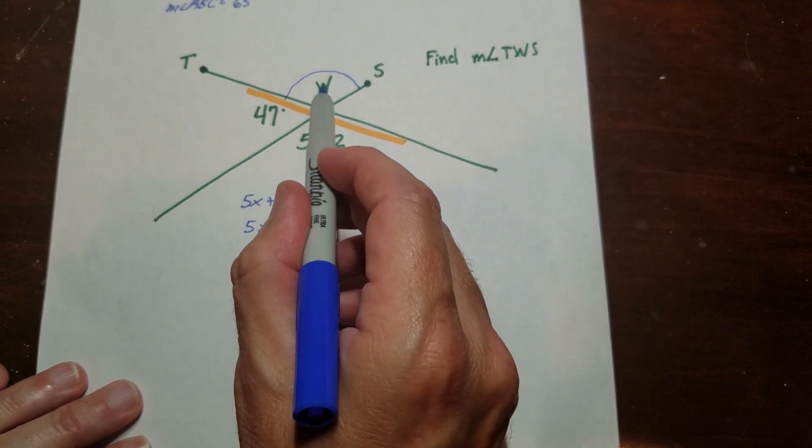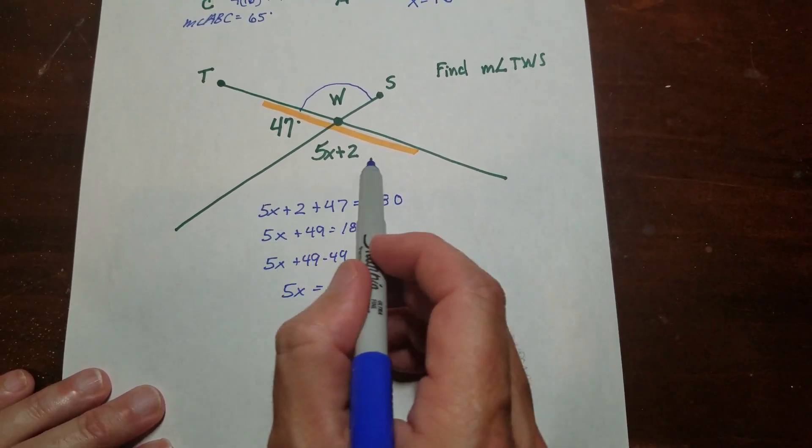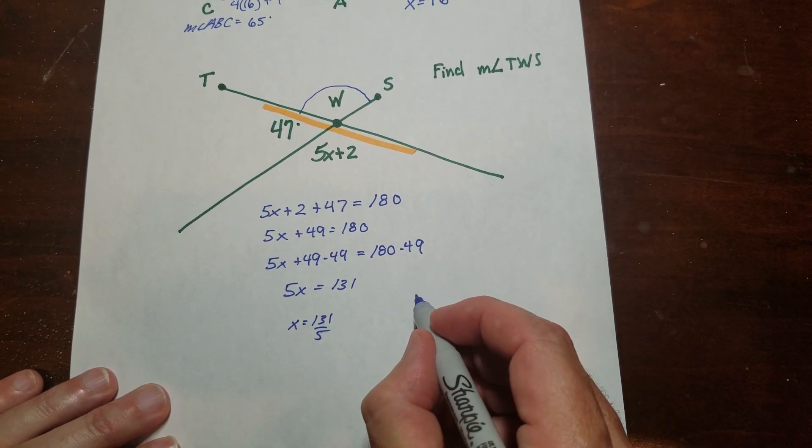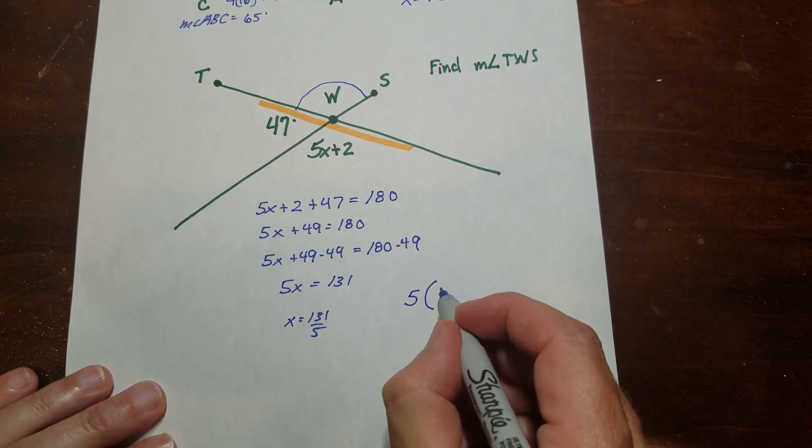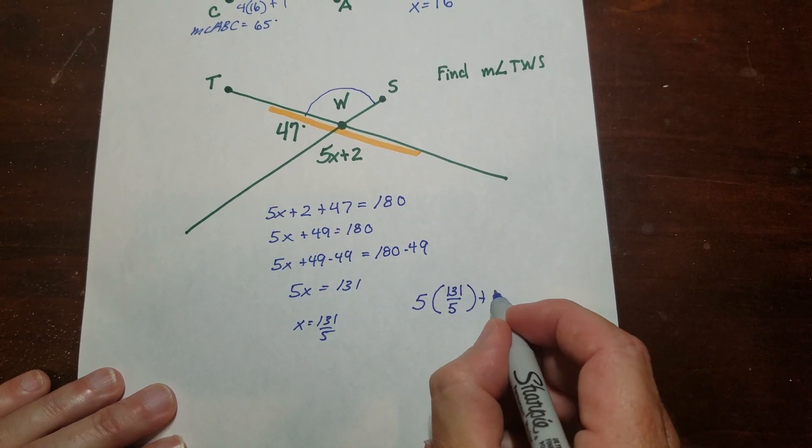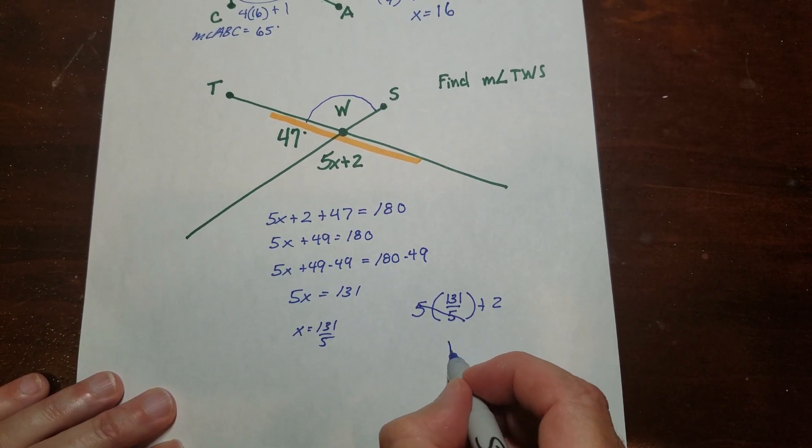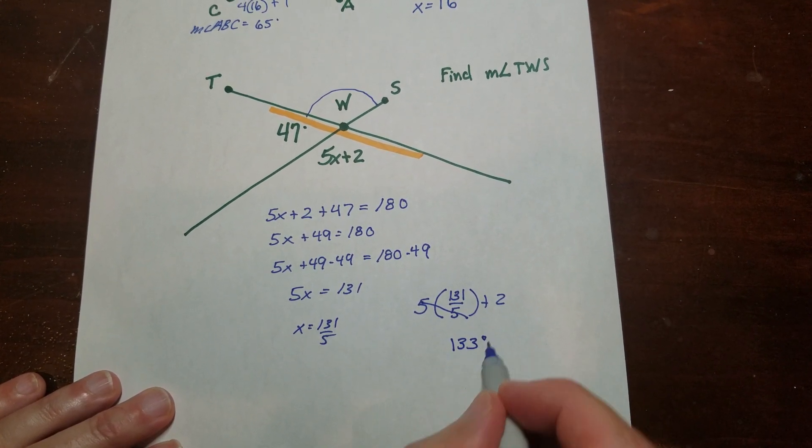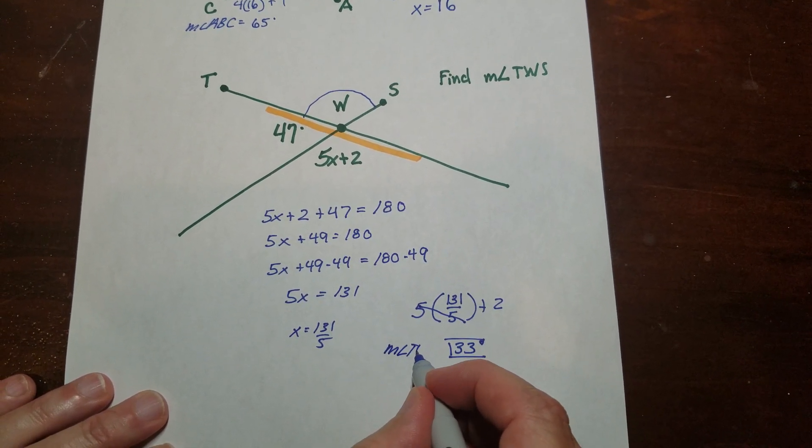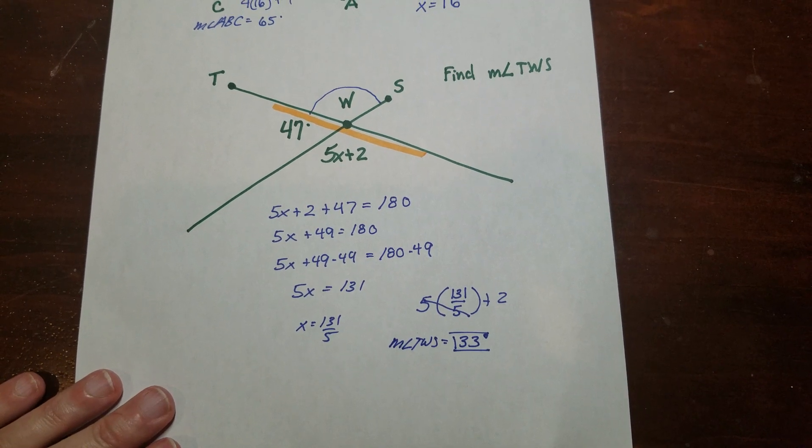So if I want to figure out what this is, these are vertical angles, so all I have to do is figure out what this one is down here. And so all I'm going to do is plug that in there. And you can see why I left it a fraction, because it actually makes it pretty easy to do. This will cancel out, so I'll get 131 plus 2, that's 133 degrees. So the measure of angle TWS is 133 degrees. Okay, that's all there is to it.